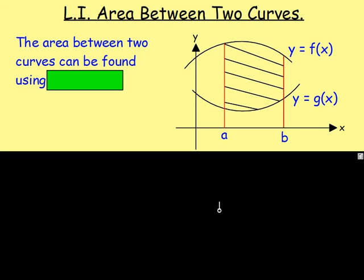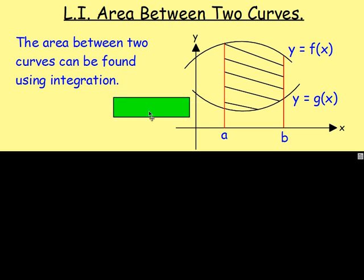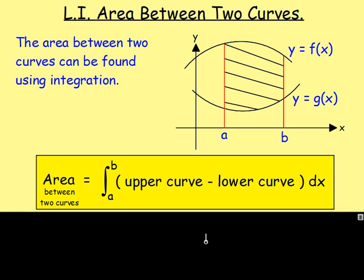Imagine you have two curves, y equals f of x and y equals g of x. If we wanted to find the area between two curves, we can use integration. The way you do it is you take the top curve minus the bottom curve, and then integrate. So to find the area between two curves, you take top curve minus bottom curve and then integrate.